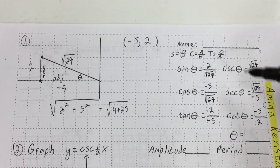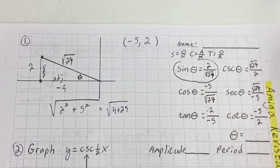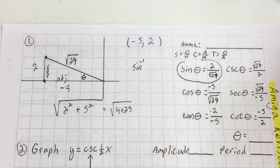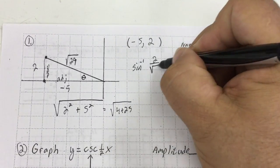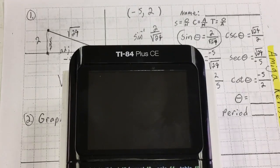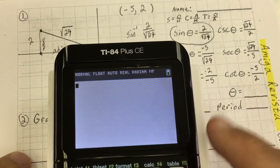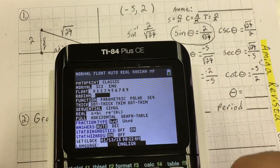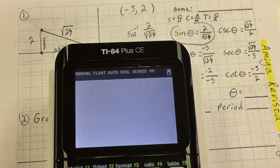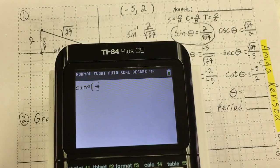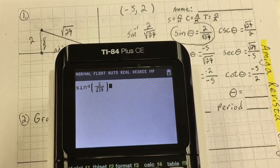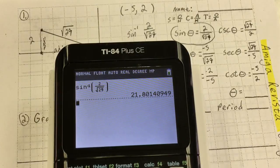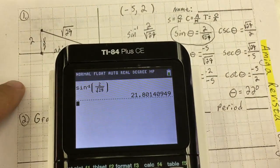Now I wish to find theta. In order to find theta, I'm going to use the positive number. So I'm going to do inverse cosine, or arc cosine, of 2 over square root 29. I'm going to do the arc sine — making sure I'm in degree mode. The arc sine of 2 over root 29 gives me 22 degrees. Theta equals 22 degrees.